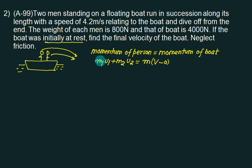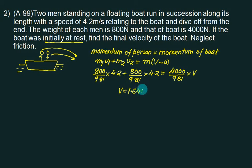So what is the mass of first person? It is 800 newtons, so divided by 9.81. With what velocity does he jump? 4.2. Mass of second person is also 800 by 9.81 with velocity 4.2. What is the mass of boat? 4000 divided by 9.81 multiplied by v. 9.81 is cancelled. If you solve this, you will get velocity of boat is 1.64 meters per second.